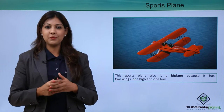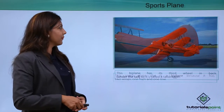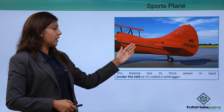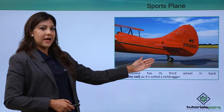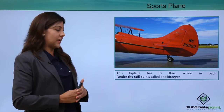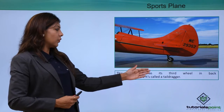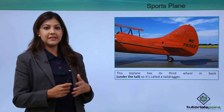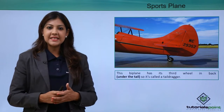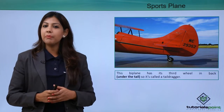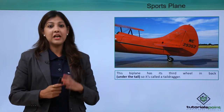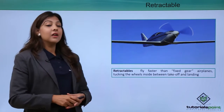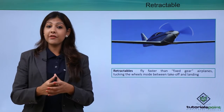Some aircraft have a third wheel located below the tail of the aircraft, called a tail dragger. When the aircraft lands, this particular wheel helps in dragging the aircraft for a certain distance.